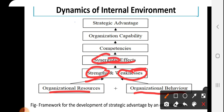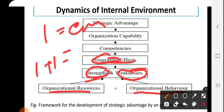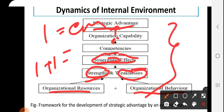If one person or one department is there, we can say energy. But more than one department or more than one person coming together — that time you can say synergistic. This synergistic effect gives competencies, meaning the better work relative to your competitors. These competencies have certain capabilities: financial capabilities, marketing capabilities, operation capabilities — these are different aspects of organizational capability. And this organizational capability gives strategic advantages or best ways to do things for your company. So this is about the dynamic of internal environments.